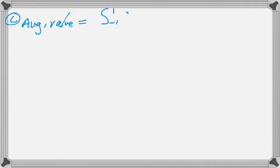All right. The next thing we want to do is average value. So average value is the integral divided by the interval. And so that's going to give us 1 half the integral from negative 1 to 1 of f of x dx.